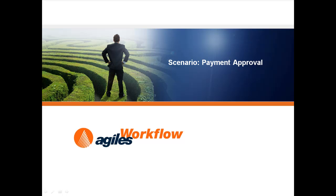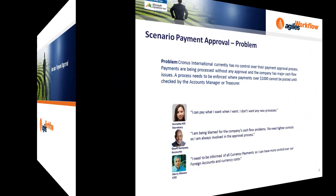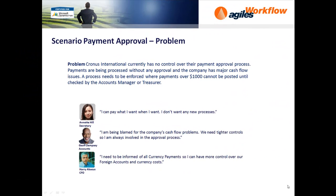Scenario: Payment Approval. Cronus International currently has no control over their payment approval process. Payments are being processed without any approval and the company has major cash flow issues. A process needs to be enforced where payments over $1,000 cannot be posted until checked by an Account Manager or Treasurer.